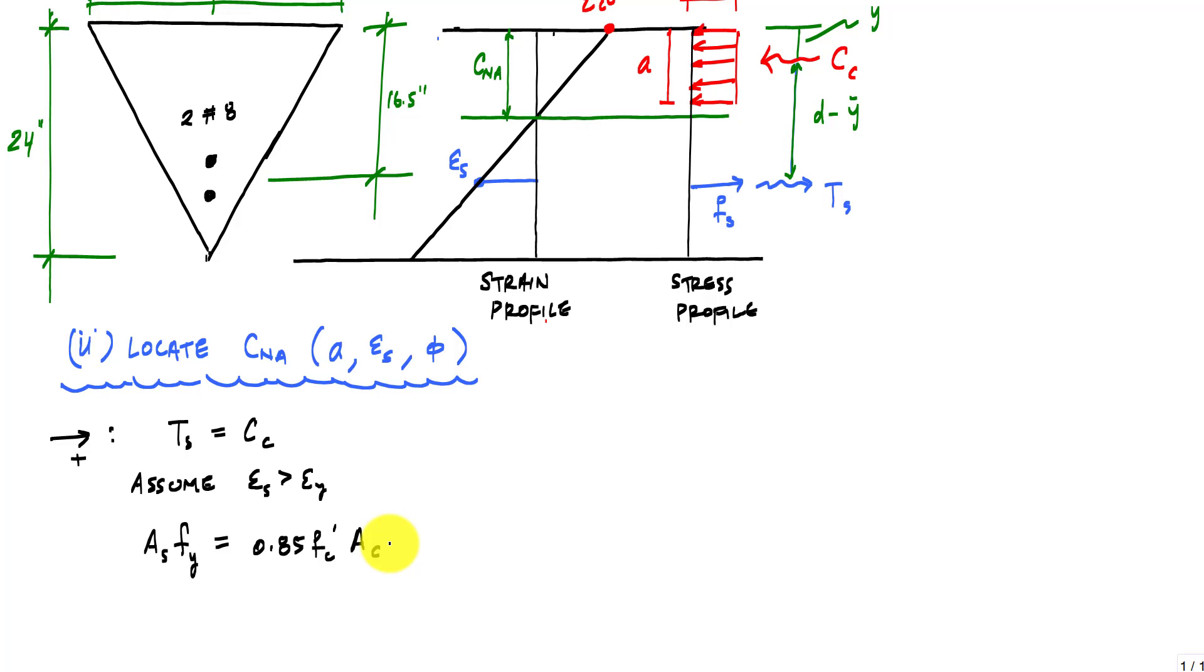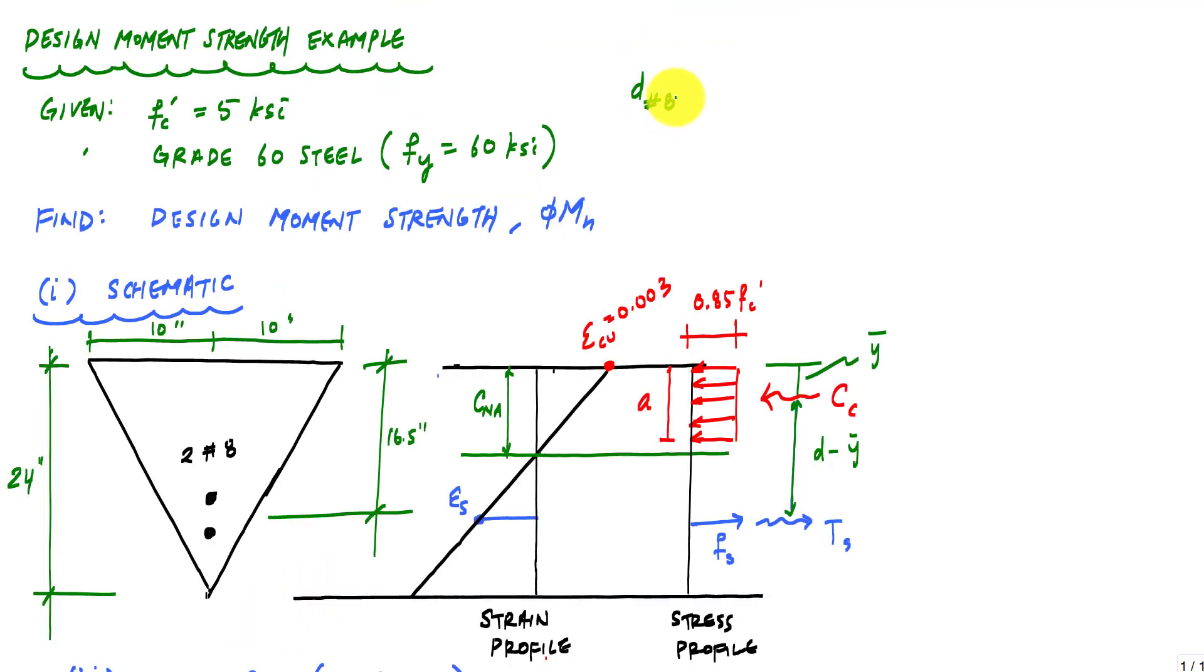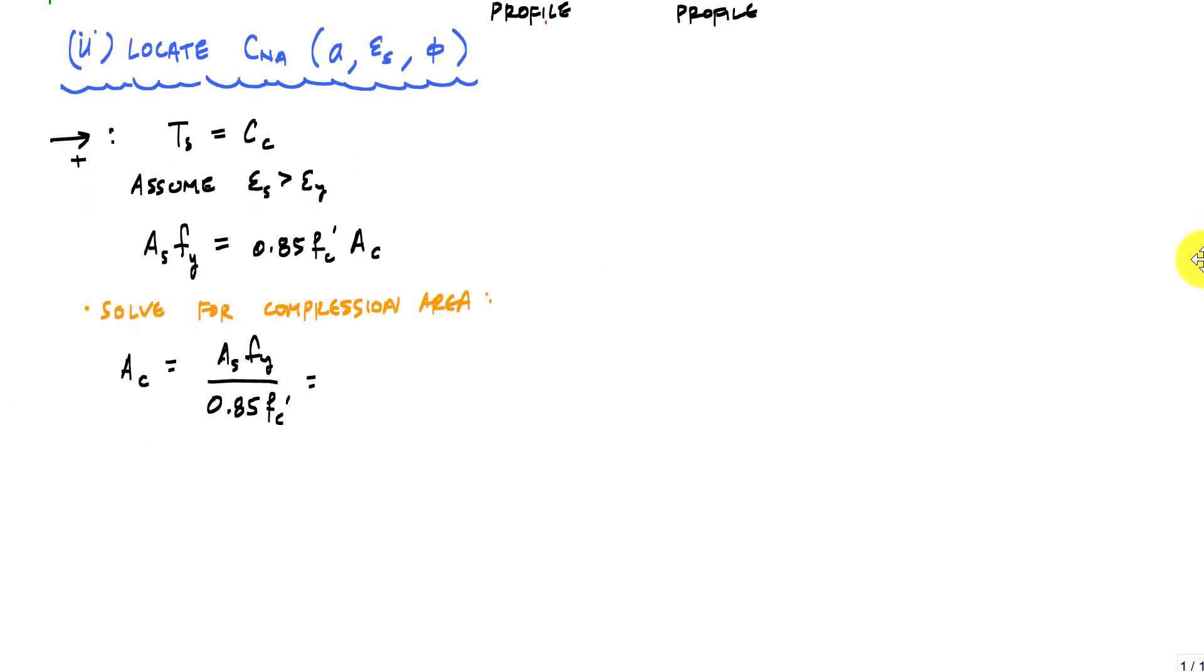And now I can say, well in that case, the force in the steel is AS times FY. The force resultant of that compression block is 0.85 FC prime and the area in compression. And I don't know what that area in compression is. And what I will do is I will solve for the area in compression. AC would be AS FY over 0.85 FC prime. The diameter of a number eight bar is one inch. And the area of a number eight bar is 0.79 inches squared here. And you can look that up in any table or in the appendix of your ACI code here.